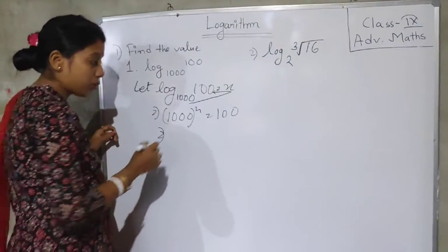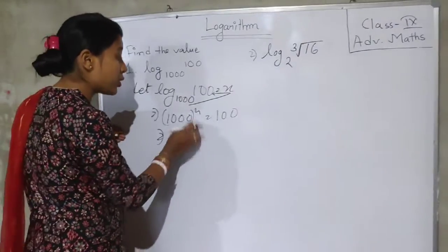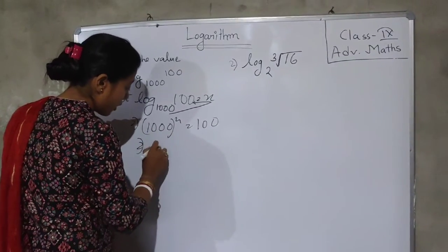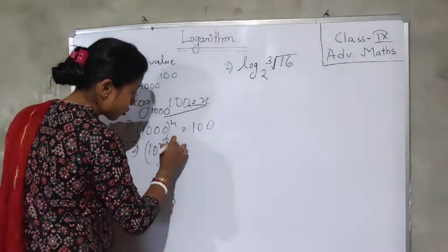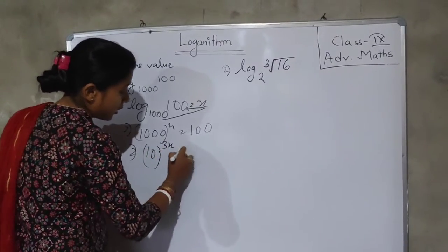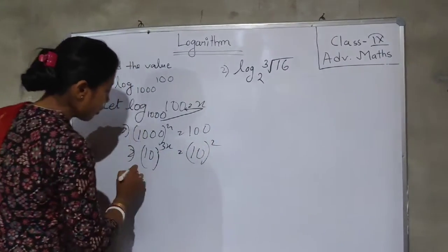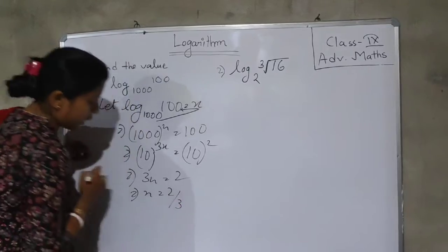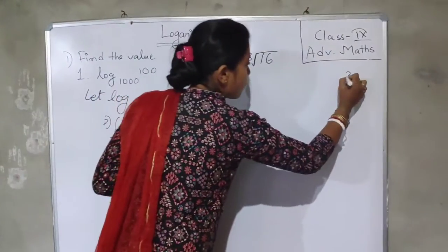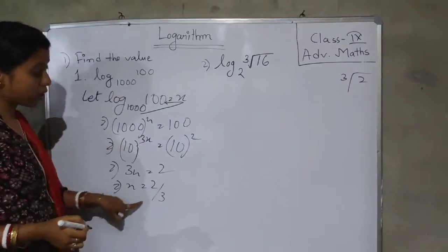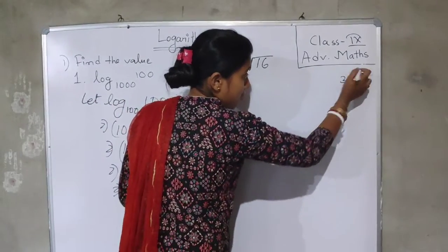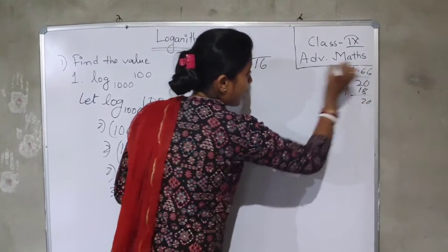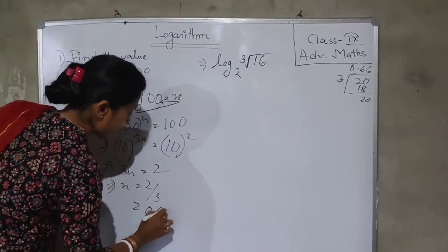Now, 1000 is 10 to the power 3, so the left side becomes 10 to the power 3x. And 100 is 10 squared. So bases are the same, giving us 3x equal to 2, therefore x equal to 2 by 3. Dividing, the answer comes to approximately 0.66.